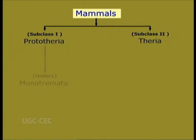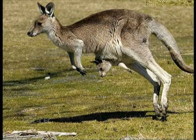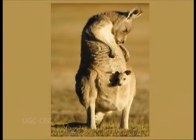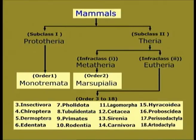The Prototherians have only one order called Monotremata. Theria consists of two infraclasses: Metatheria and Eutheria. Metatheria are the marsupials — animals with marsupium or abdominal pouch — and Eutheria bearing all the placental mammals that have the presence of placenta.